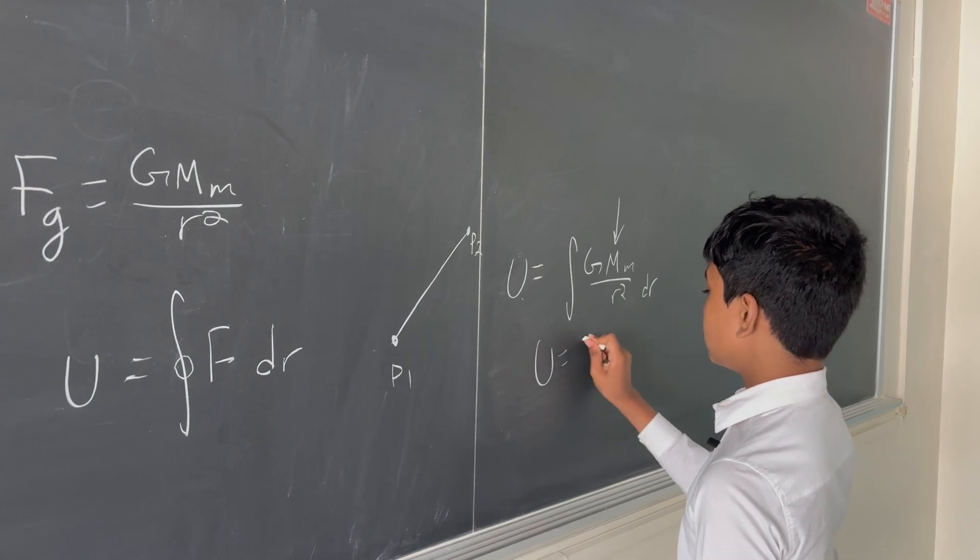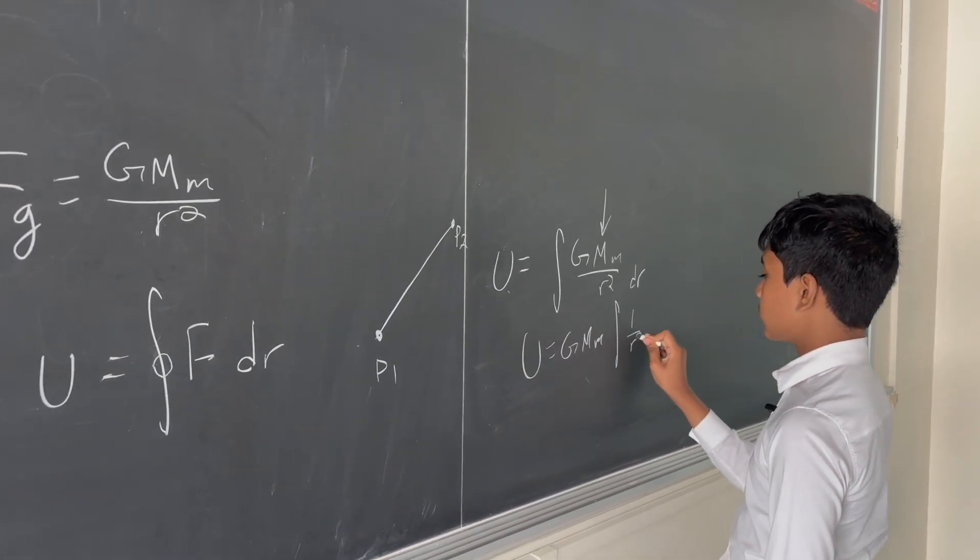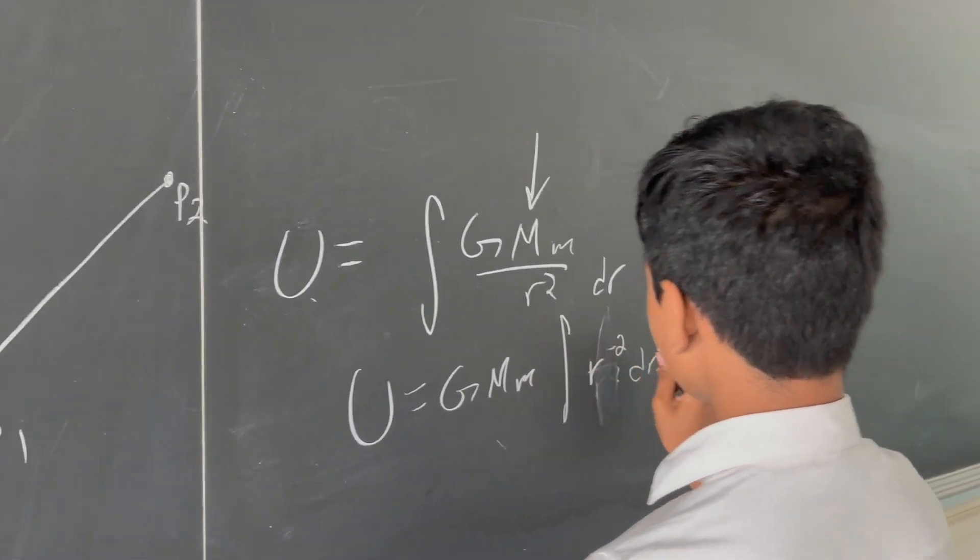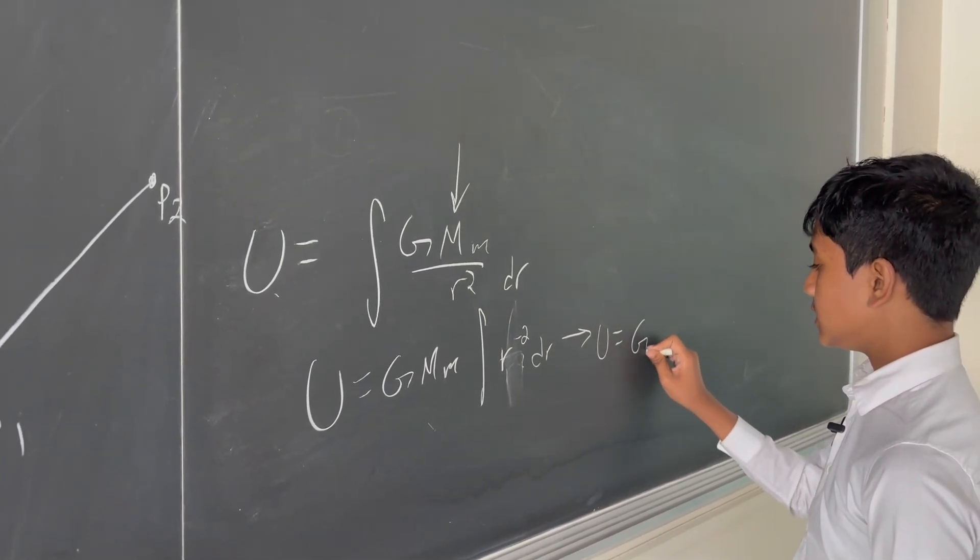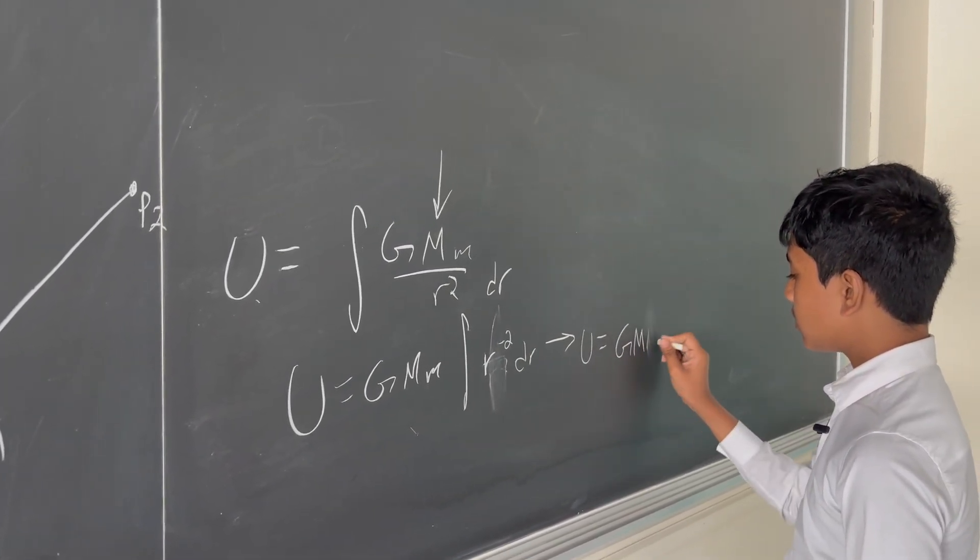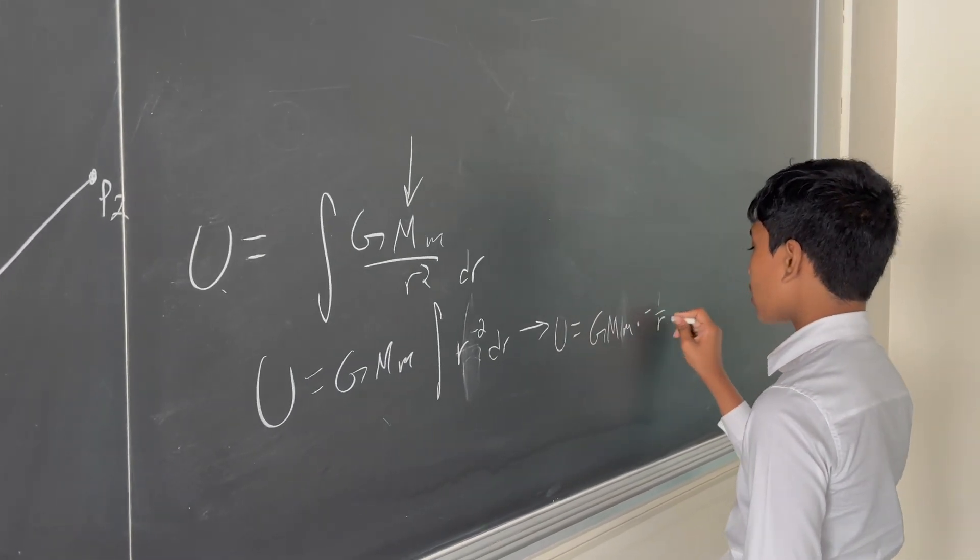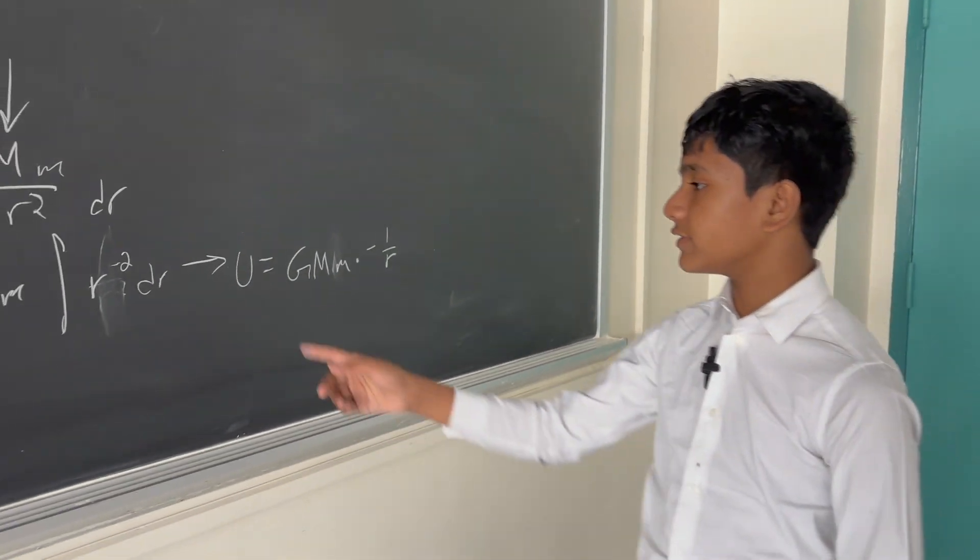Which means we've just got this times the integral of 1 over r squared dr. So then we use the inverse power rule and get that U is equal to GMm times minus 1 over r. So that's the formula for gravitational potential.